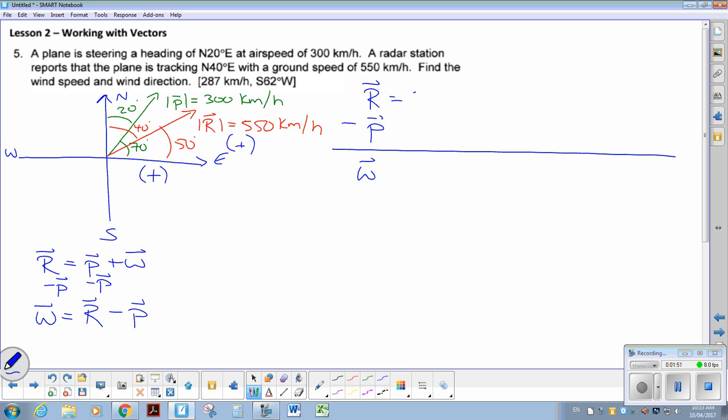So that means I'm going to have 550 cos 50, just making sure I grab the right numbers, plus 550 sine 50 j.